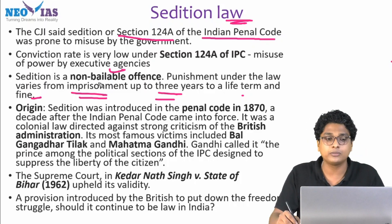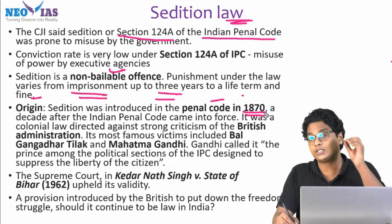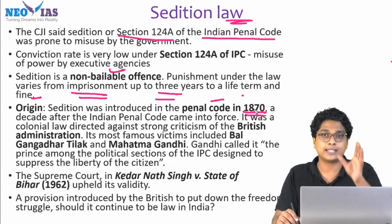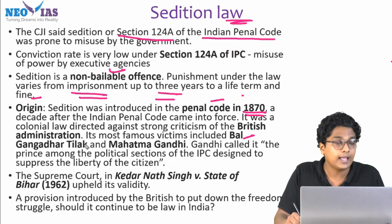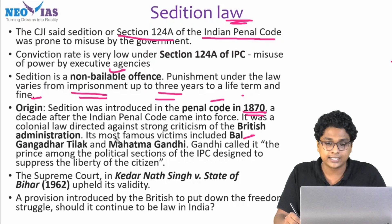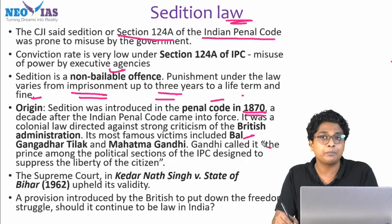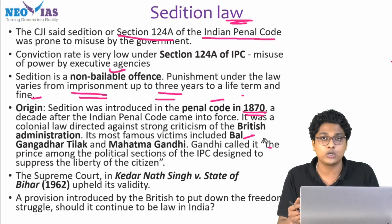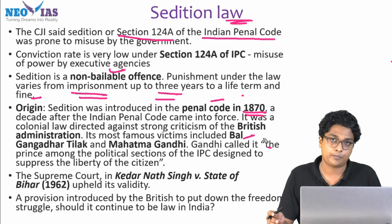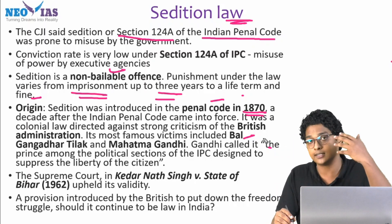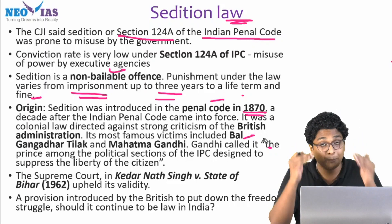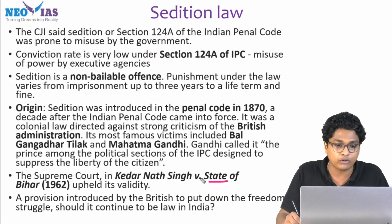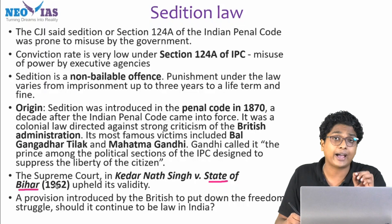A few details regarding the sedition law: its origin was introduced in the Penal Code in 1870 and was largely used by the British administration to suppress the freedom struggle. Famous personalities who were victims of the sedition law were Bal Gangadhar Tilak and Mahatma Gandhi. Gandhi himself called it 'the prince among the political sections of the IPC designed to suppress the liberty of the citizen.' One famous judgment is Kedar Nath Singh versus the State of Bihar, where the Supreme Court upheld the validity of the sedition law.